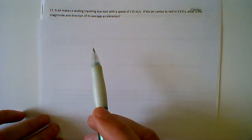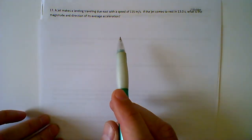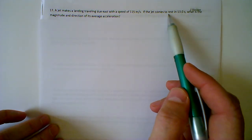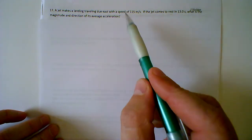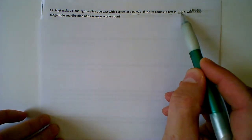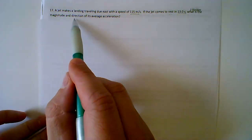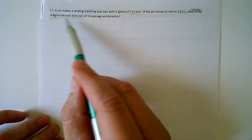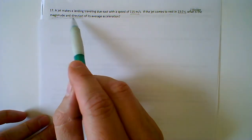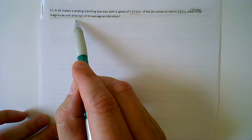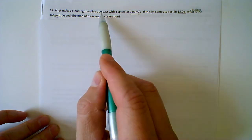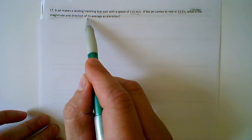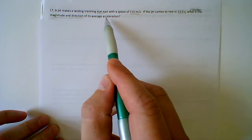In this problem, a jet makes a landing traveling due east with a speed of 115 meters per second. If the jet comes to rest — that's going to be important — in 3.0 seconds, what is the magnitude and direction? This is telling you what kind of answer you're going to need: the number, unit, and direction. Since we know the direction is due east, this will go into the final answer of its average acceleration.